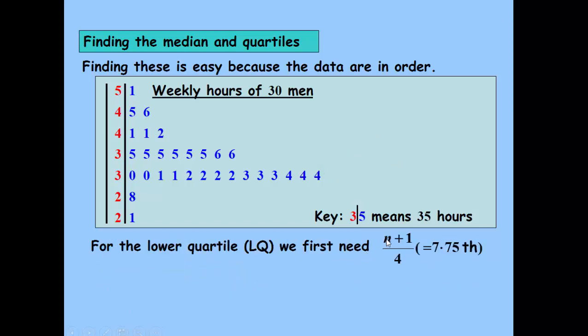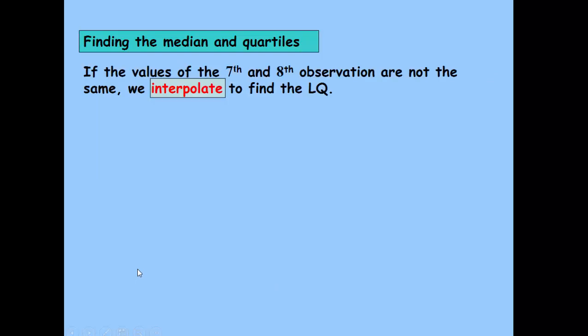Lower quartile, we do a similar exercise: n+1 over 4. So the 7.75 term. And that tells us that the lower quartile is 32. Again, if they weren't the same, we would have to interpolate.